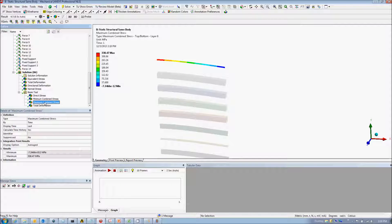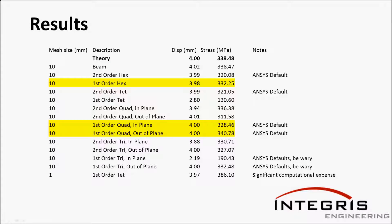A look at the beam results shows a similar pattern seen in the majority of the models. In the results summary table, I have highlighted the results with best correlation, other than the beam element model. The first order hex on the solid elements shows good results, as does the first order quad on the shell elements. Note that the meshes ANSYS will create by default show reasonable results.